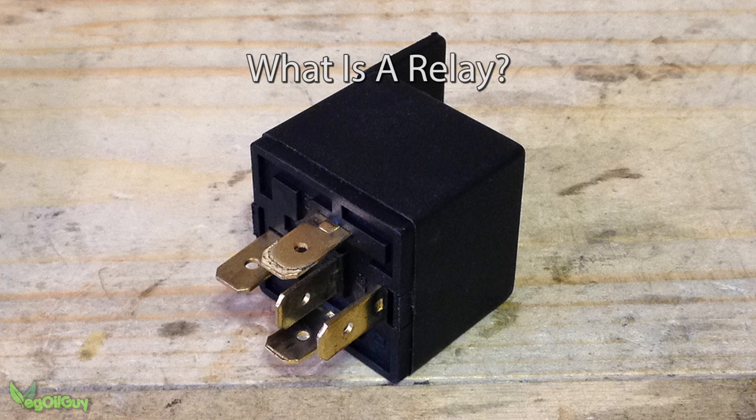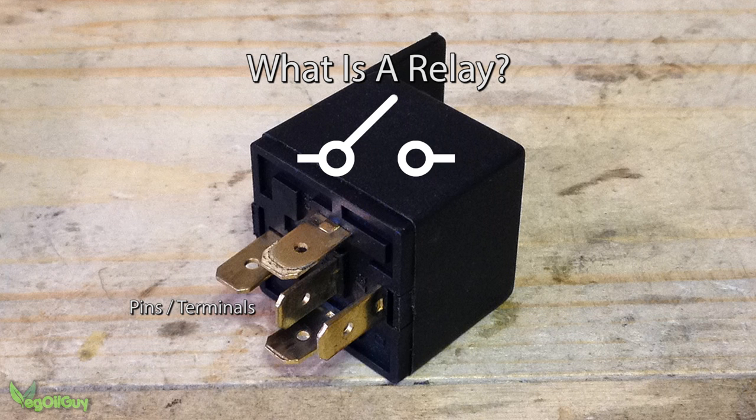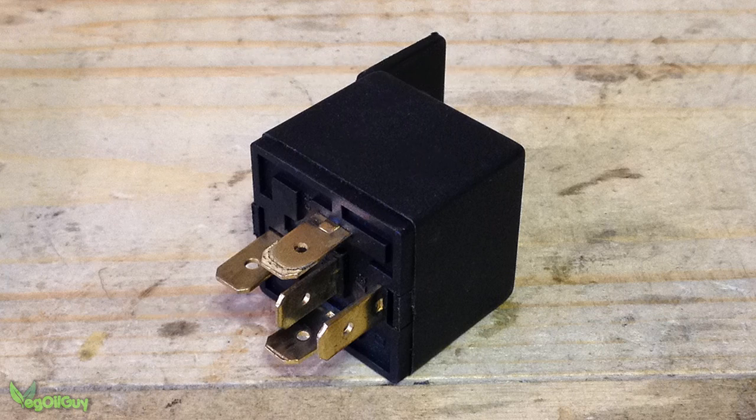So what is a relay? A relay is simply an electronic switch. They come in different shapes and sizes and usually have four or more metal lugs sticking out of them, these are terminals or pins. But what's going on inside them is what's really important.